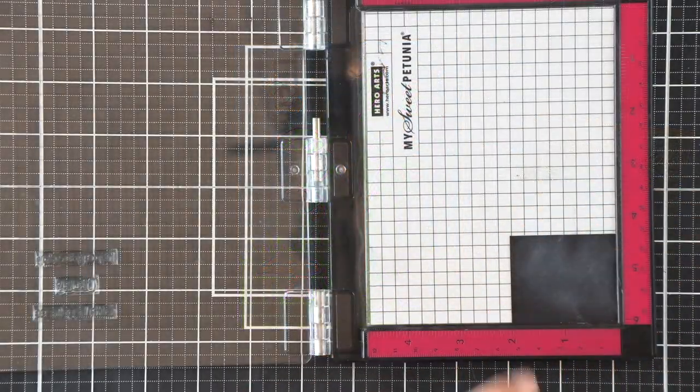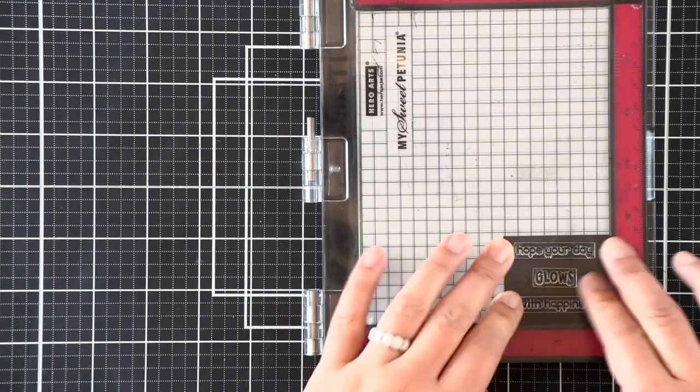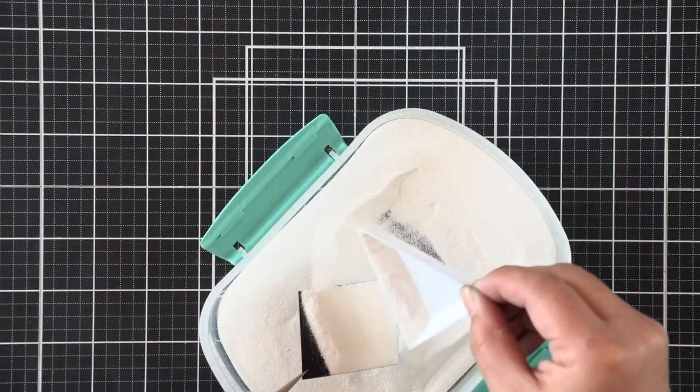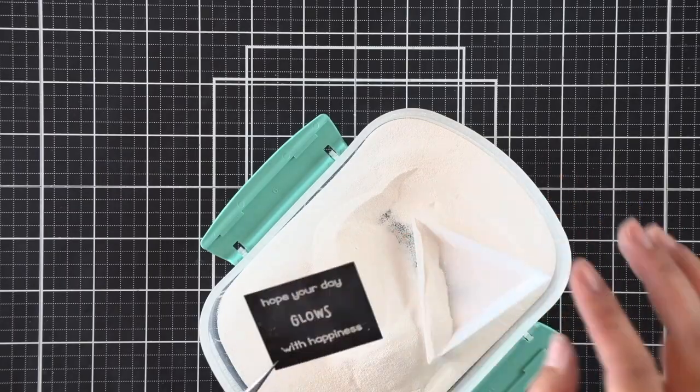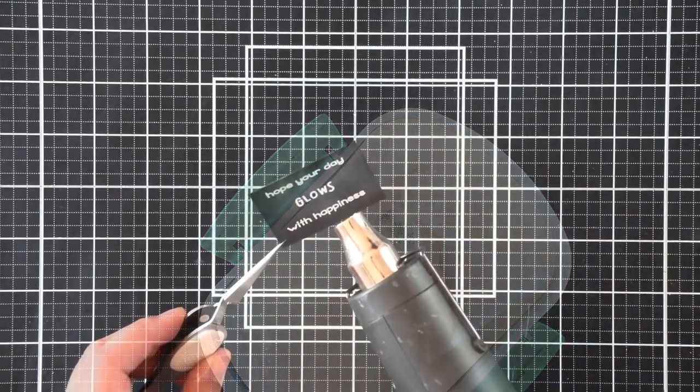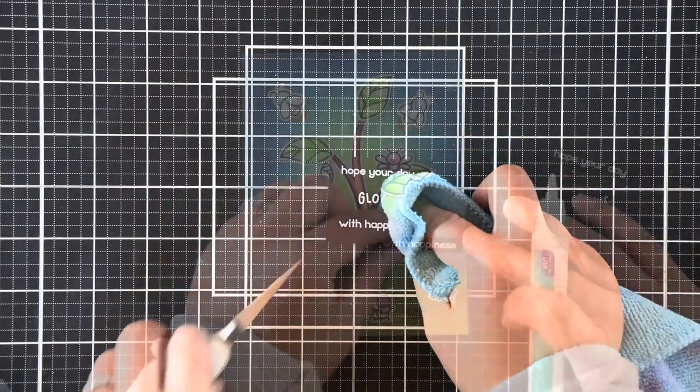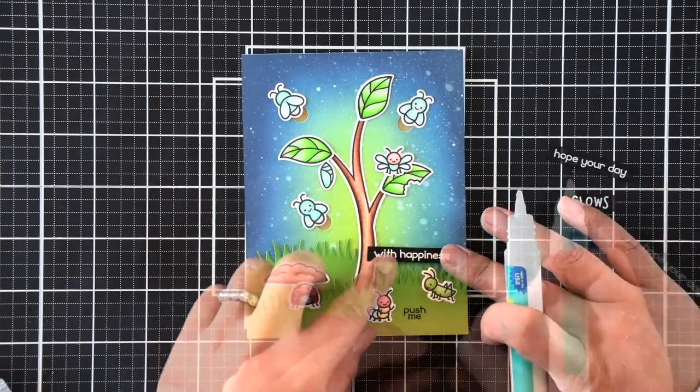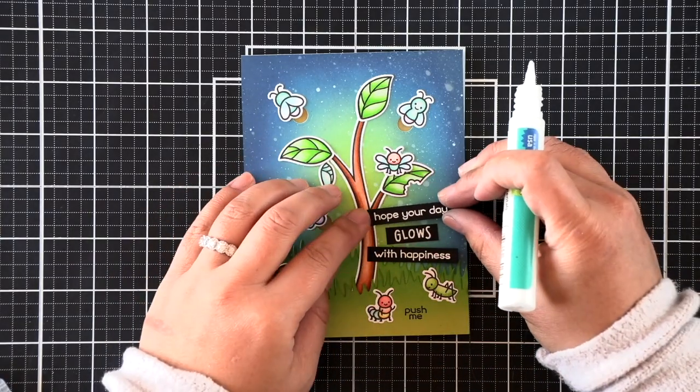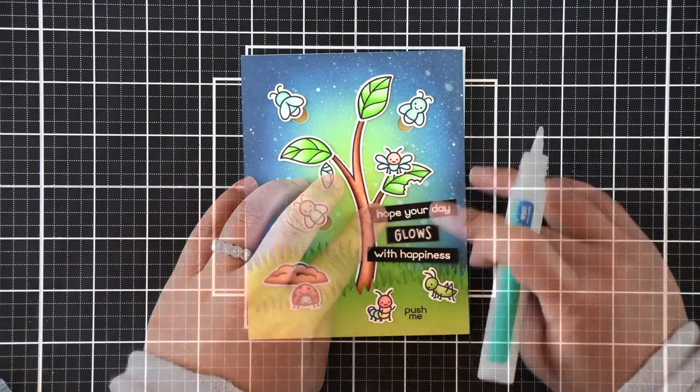And to finish, we're going to go ahead and emboss a sentiment. I'm going to emboss some sentiments from the Little Firefly set. It says, I hope your day glows with happiness. I make sure that everything is clean before I heat set the panel. And then I'm just going to buff away the clay that's on my black cardstock. And I cut these down into strips before adhering them over my card.